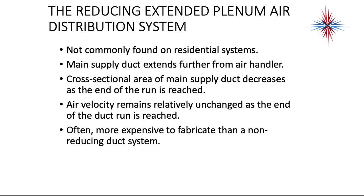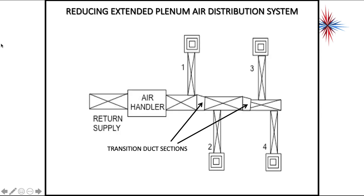In other words, the area gets smaller. This forces the air velocity to remain relatively unchanged. If we decrease the area of the ductwork and maintain our airflow, our velocity is going to stay the same. It's a more expensive situation to fabricate than the non-reducing duct system. What happens is after every takeoff, we reduce the size using a transition duct section to decrease the area of the ductwork — decrease the size. When we decrease the area, we're forcing the airflow through a smaller area of duct, which increases the speed.